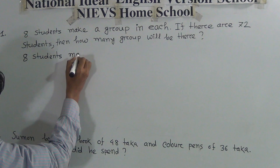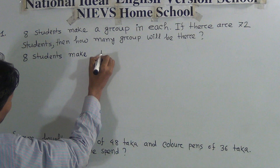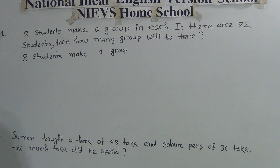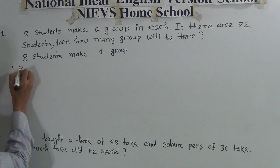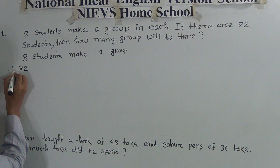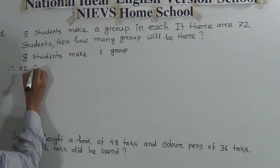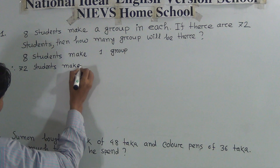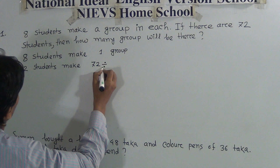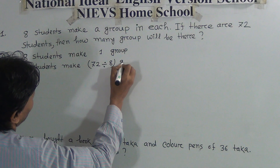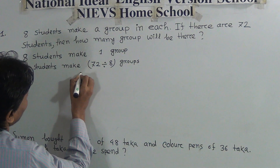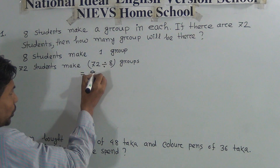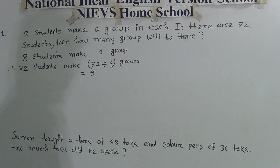Solution: 8 students make one group. Therefore, 72 students make 72 divided by 8 groups. If you divide 72 by 8, you get 9, because 9 eights are 72.